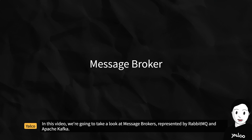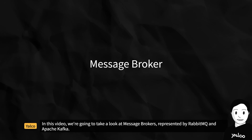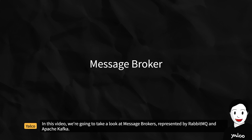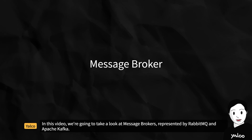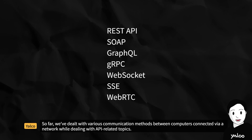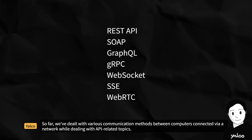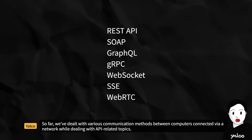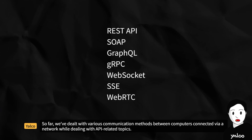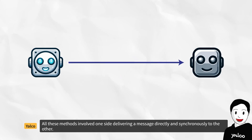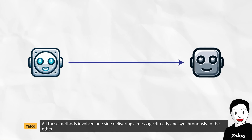In this video, we're going to take a look at Message Brokers, represented by RabbitMQ and Apache Kafka. So far, we've dealt with various communication methods between computers connected via a network while dealing with API-related topics. All these methods involved one side delivering a message directly and synchronously to the other.